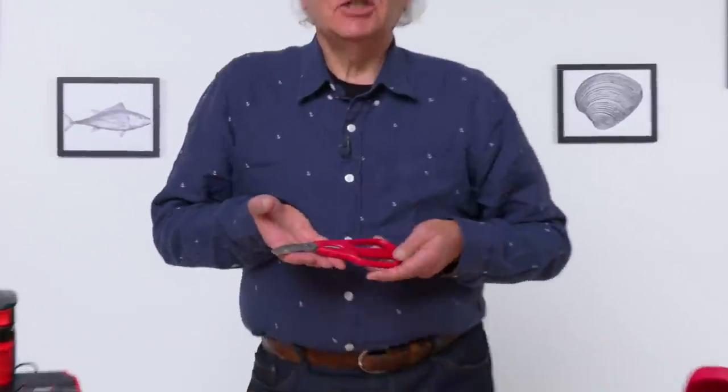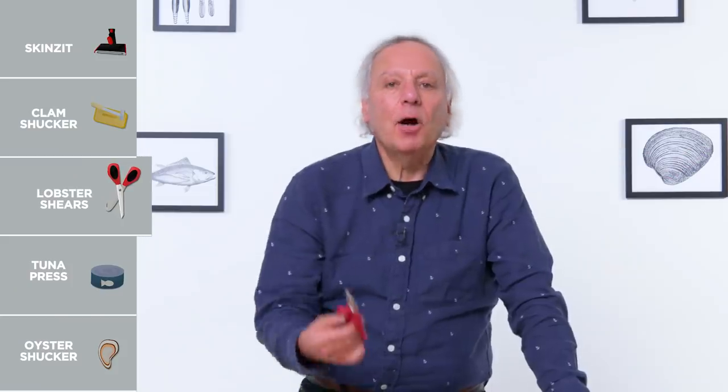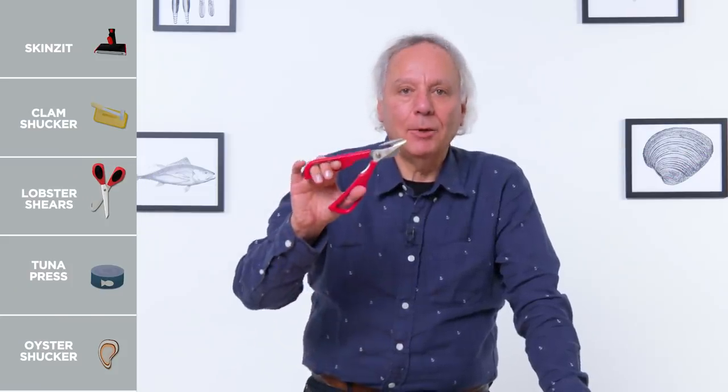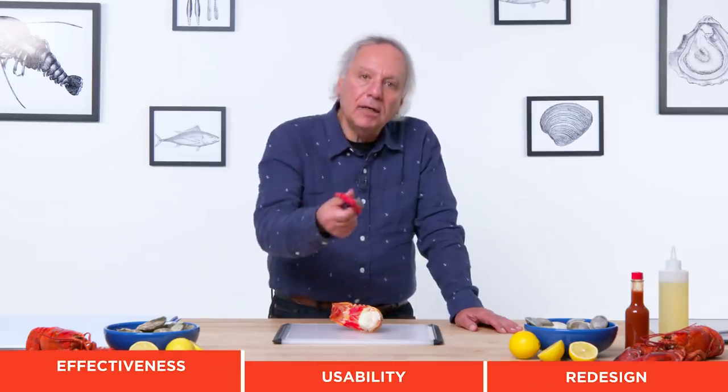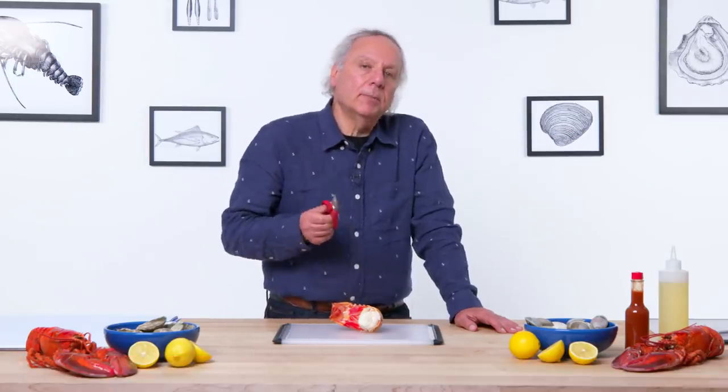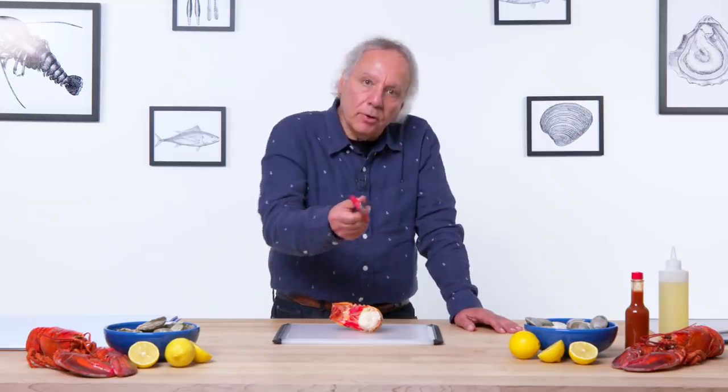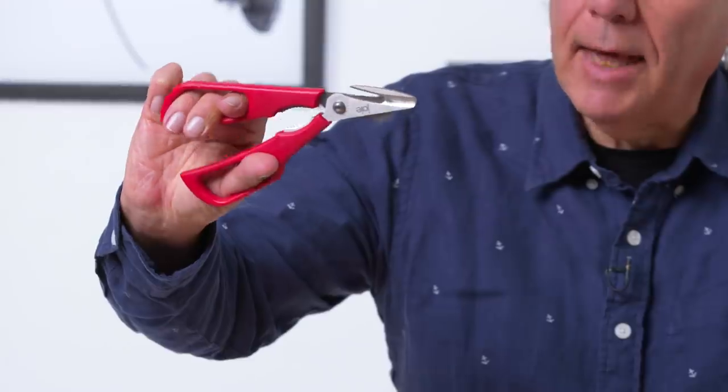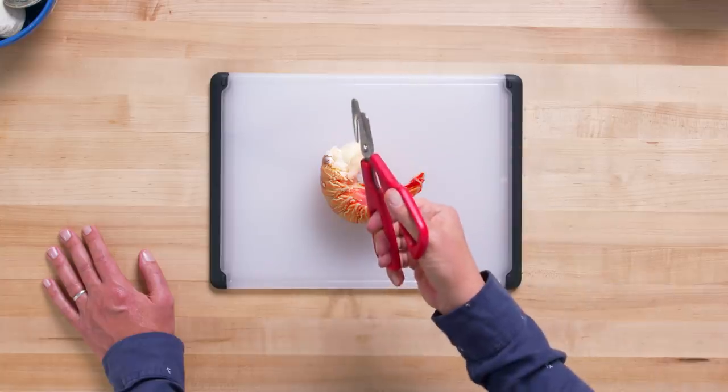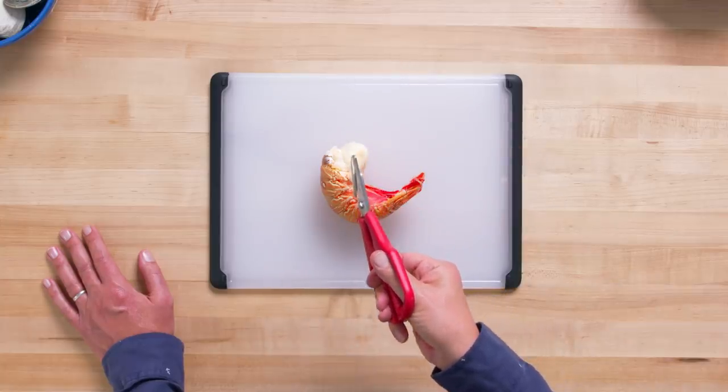Next, lobster shears. Let's snip our way through some lobster tails, shall we? So these are rather unique. They are actually designed to cut as you pull towards yourself, as opposed to a standard pair of scissors, which you push away from yourself. So they've got a hook here that will catch the lobster shell. As you're cutting, I'm gonna be pulling it towards me.